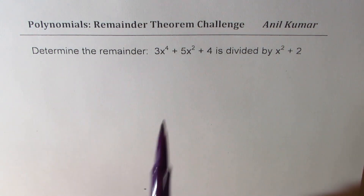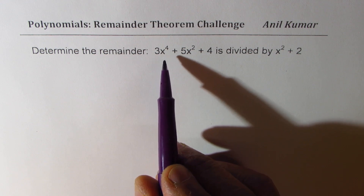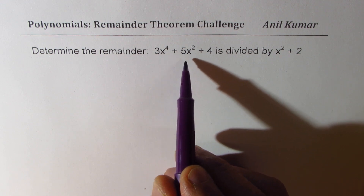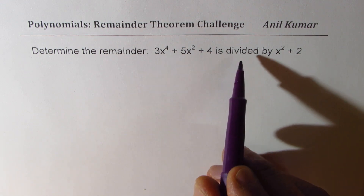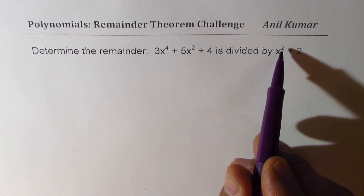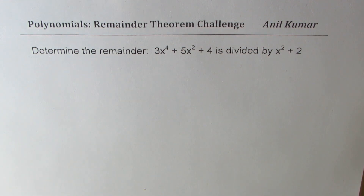Determine the remainder when 3x to the power of 4 plus 5x squared plus 4 is divided by x squared plus 2.